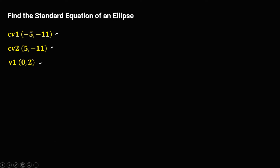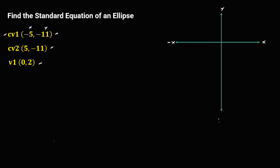First, we need to graph this ellipse to know if it is a horizontal ellipse or a vertical ellipse. From the given coordinates, we identify positive x, positive y, negative x, and negative y directions.